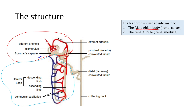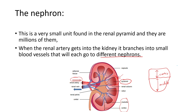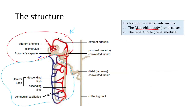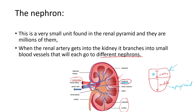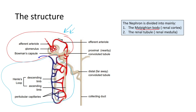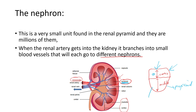The Malpighian body is found in the renal cortex — the top part of the renal pyramid. The renal tubule, the remaining lower part, is found in the renal medulla.